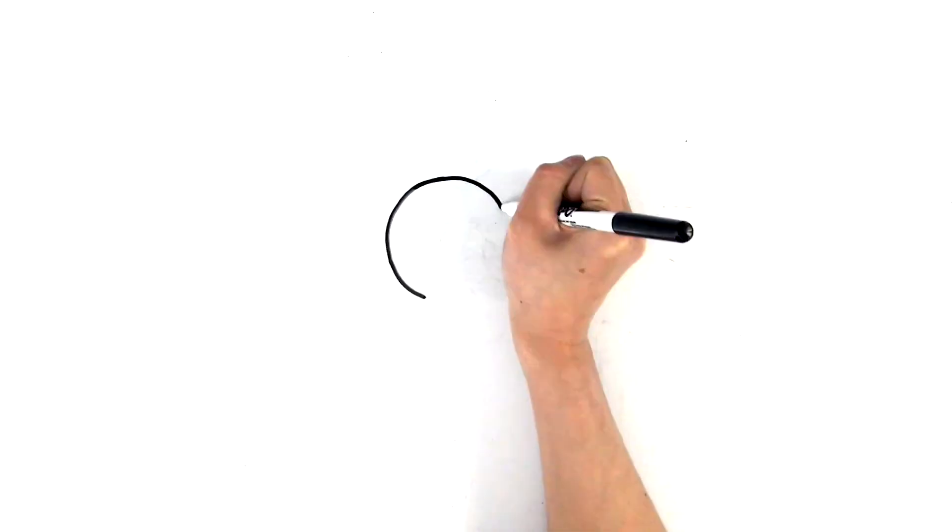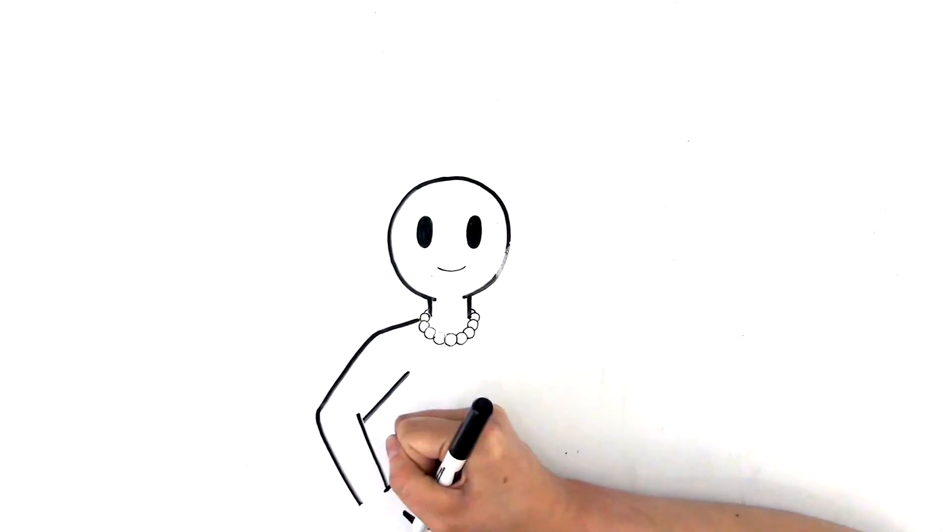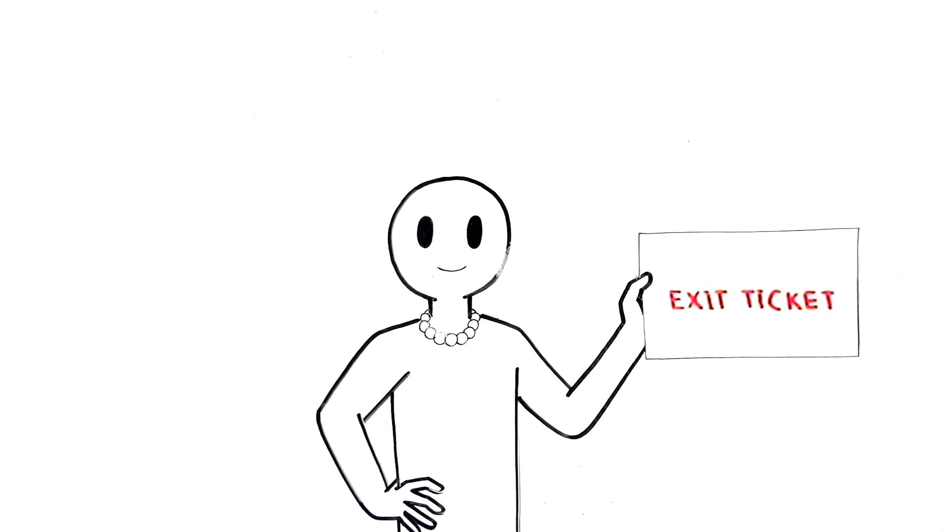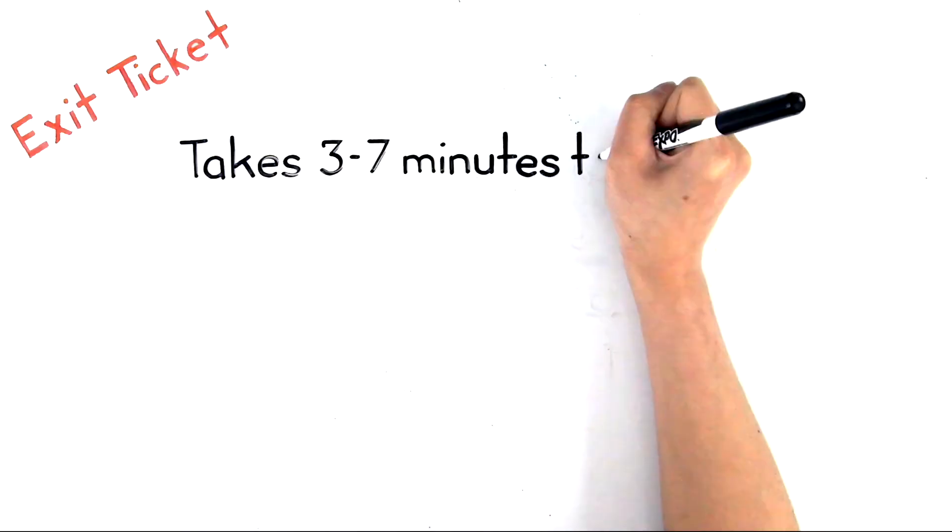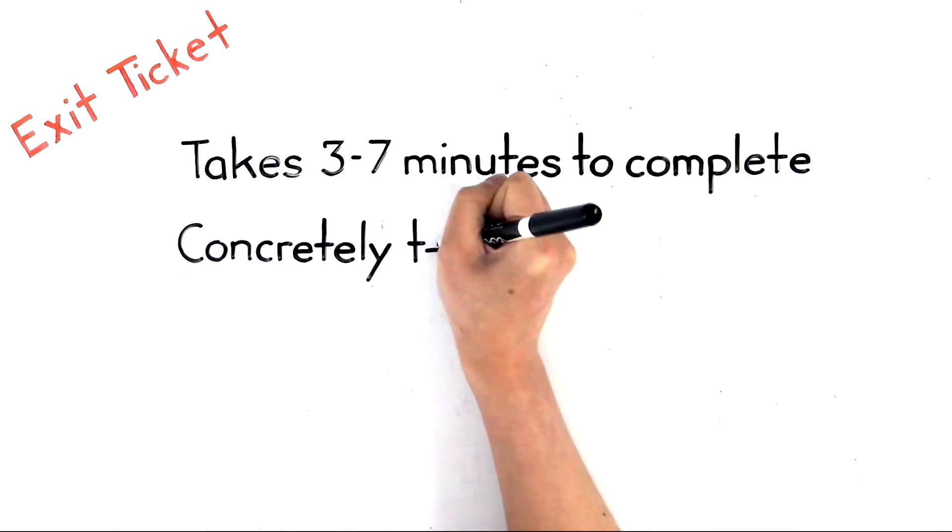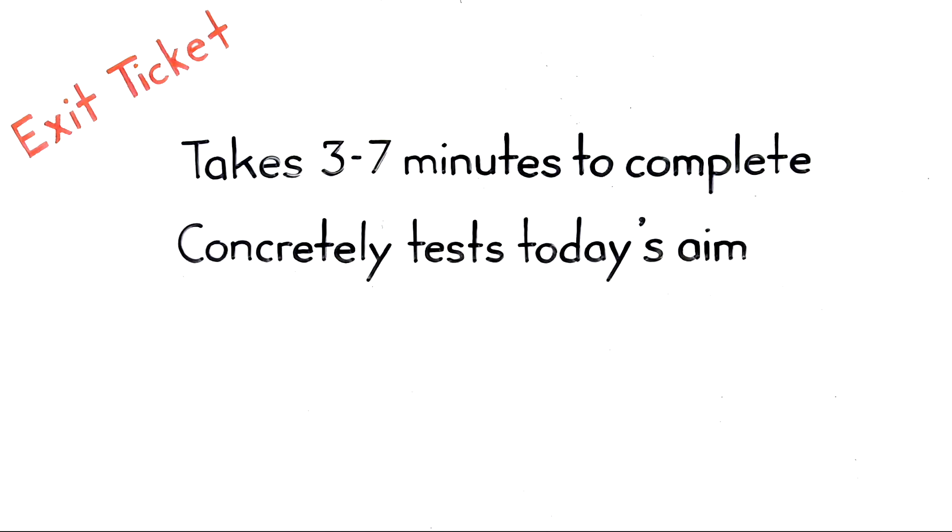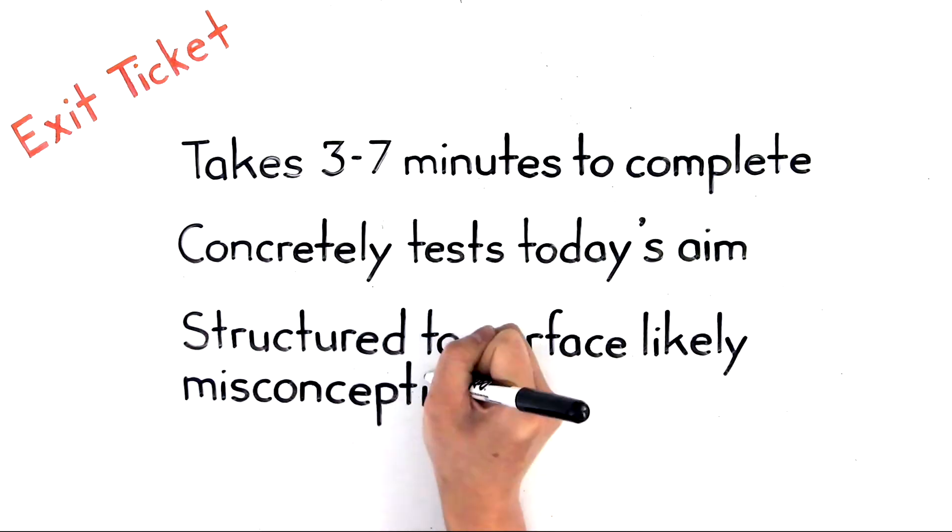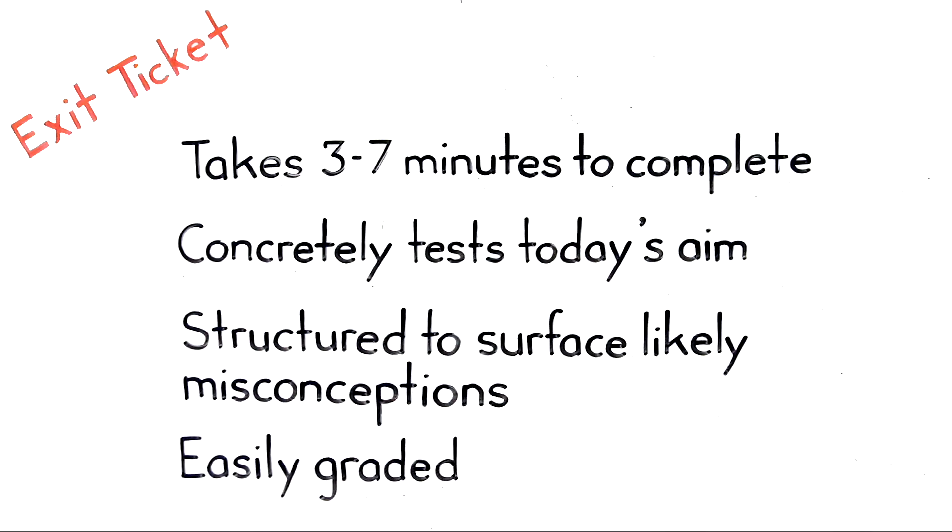In order to plan effectively for tomorrow, always give your class an exit ticket. It's the very last thing you do every day - a three to seven minute assessment that measures the degree to which students mastered the day's aim. You're going to use the exit ticket to quickly get an idea of what your students learned and what they didn't, so it needs to be easily assessed.